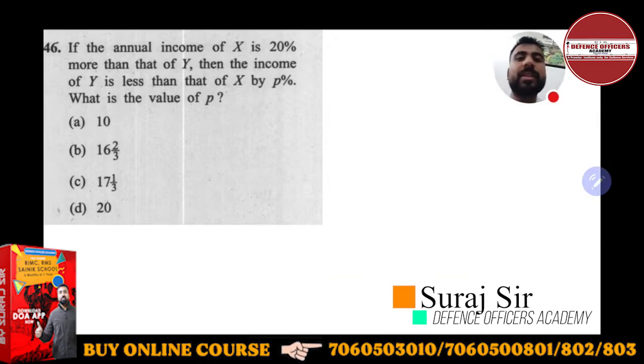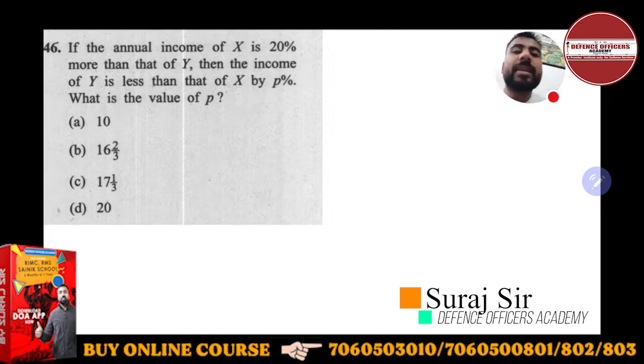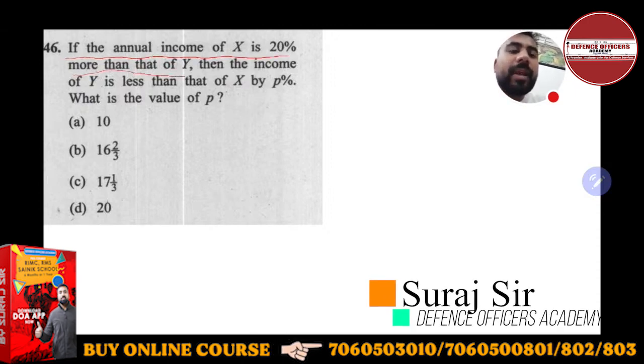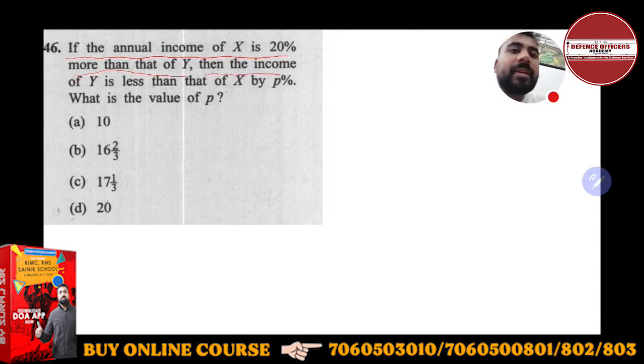Now let's move to this problem. This is also important. What is given? If the annual income of X is 20% more than that of Y, then the income of Y is less than that of X by p%. What is the value of p?